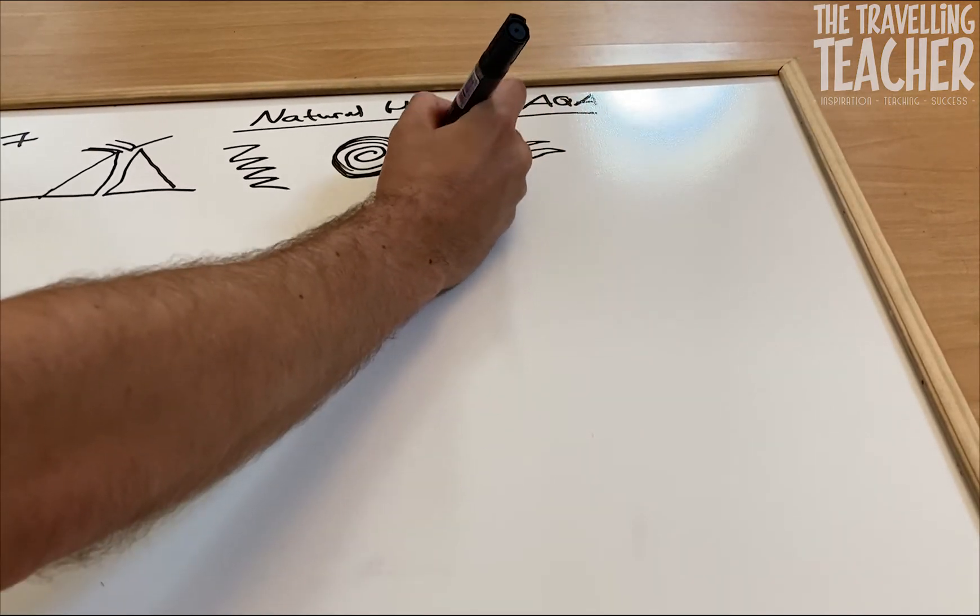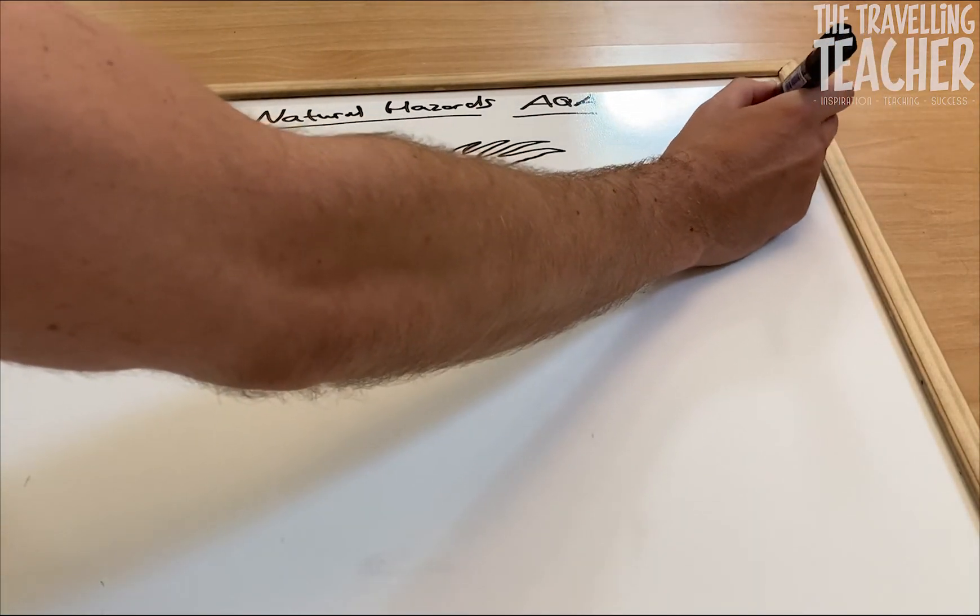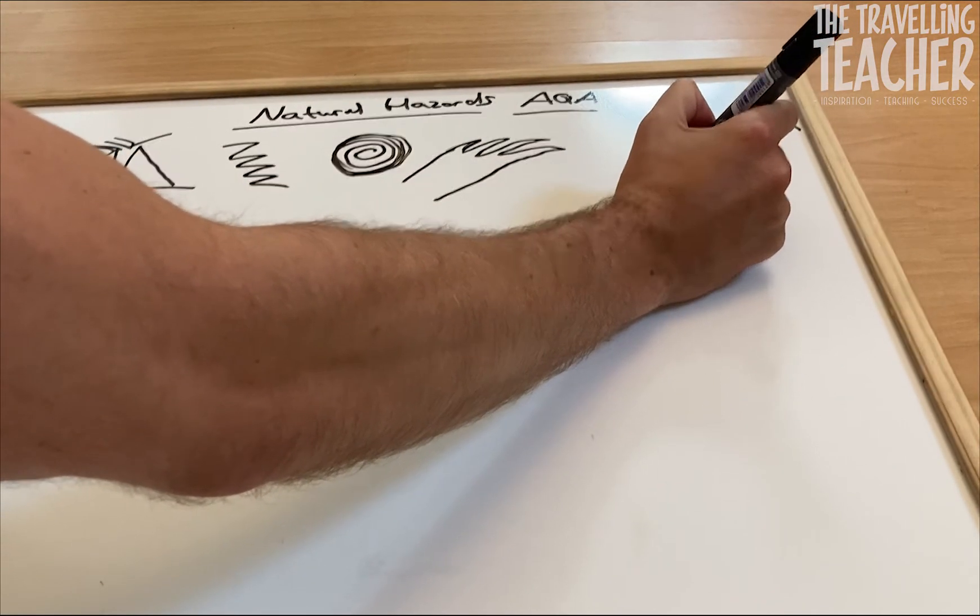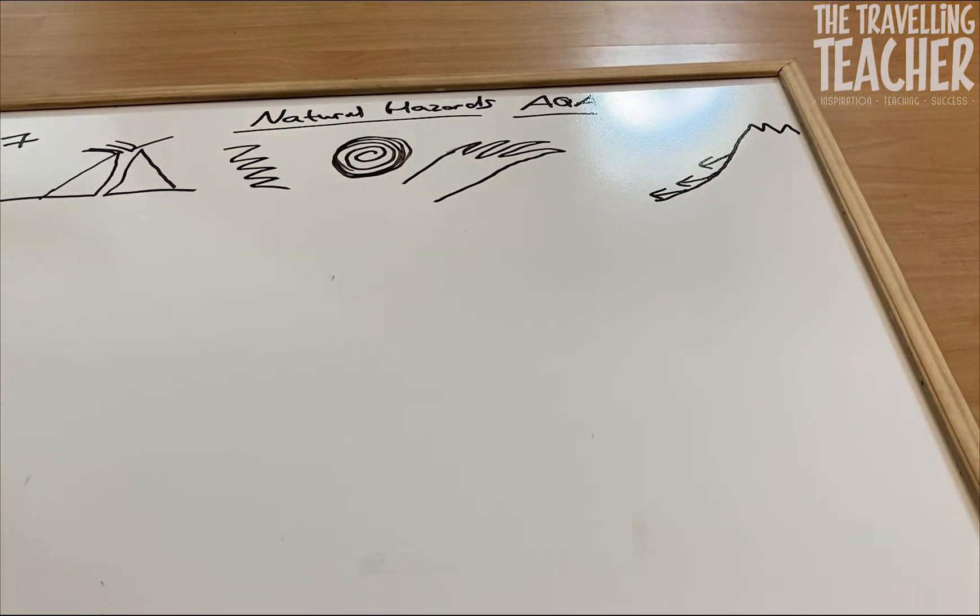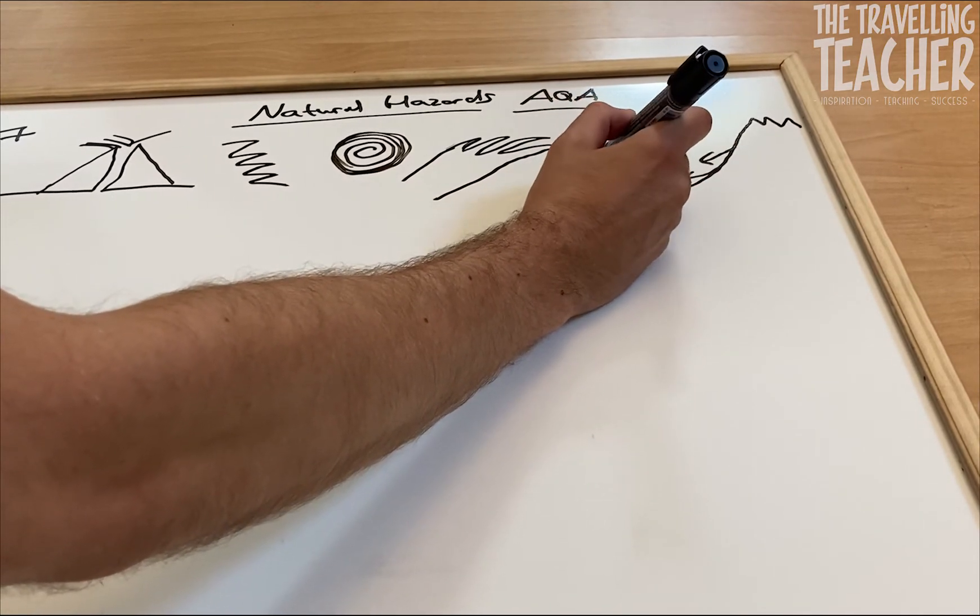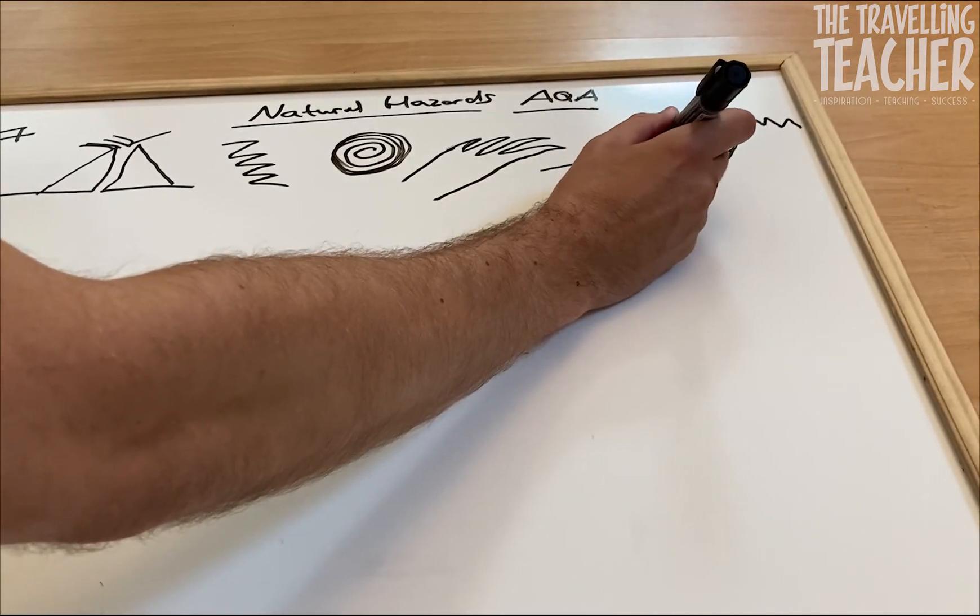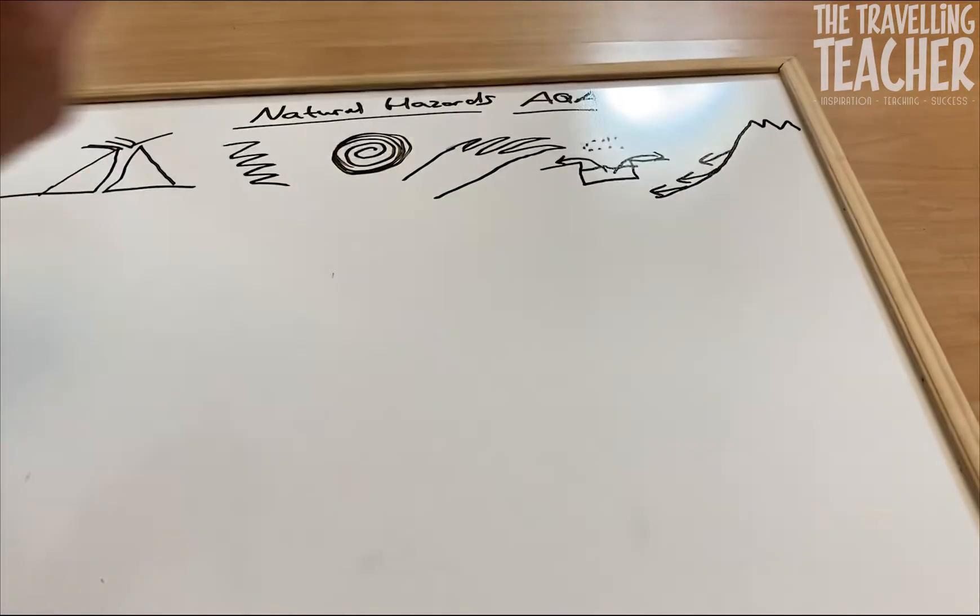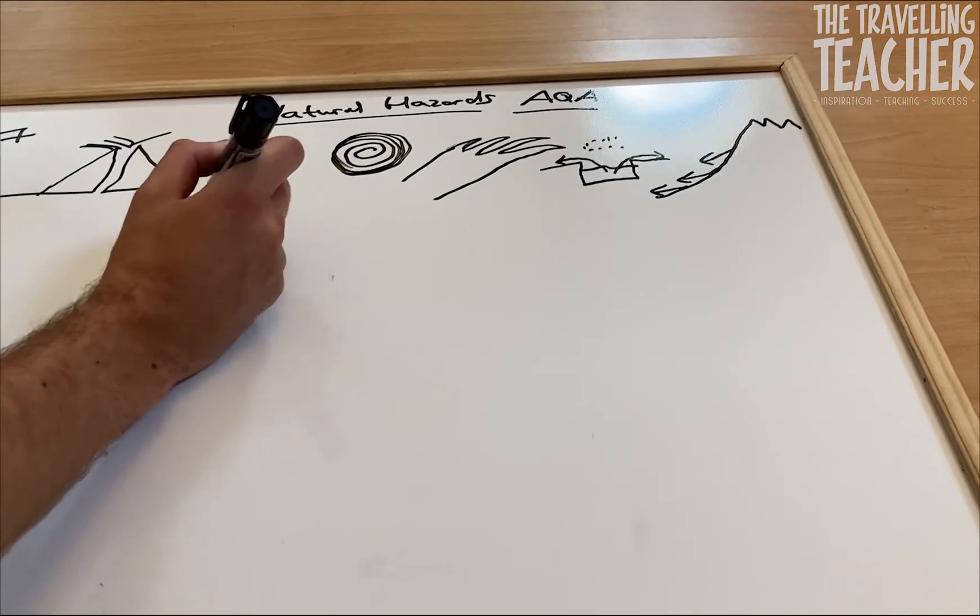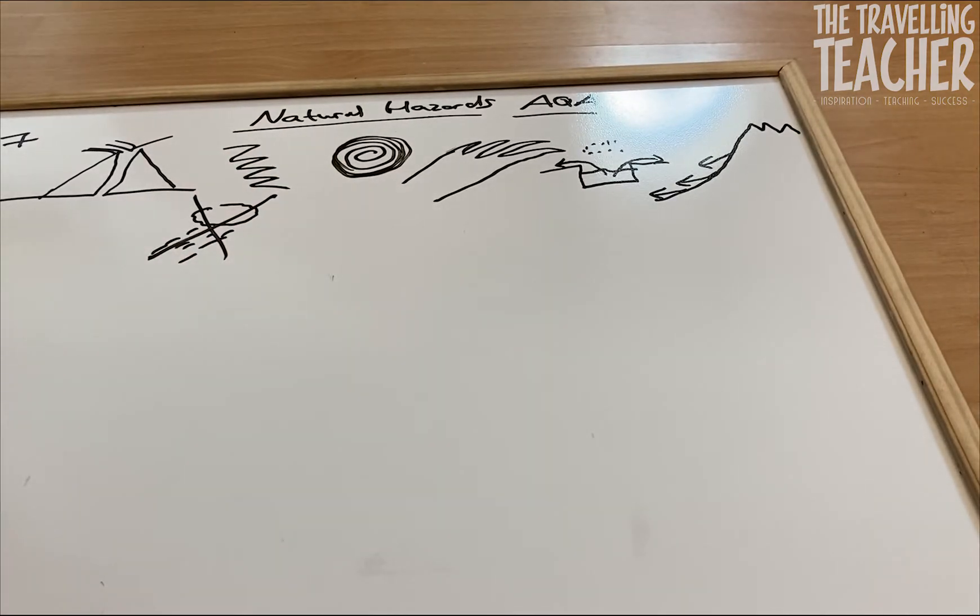The fourth would be those large waves known as a tsunami, there goes my large wave coming from the ocean. The next one could be a landslide, so we've got a mountain, it's when a side of the mountain slides down. The next one could be flooding, so this could be river flooding, so there's my cross-section of a river. And the last one would be drought, so if I draw some rain, obviously drought is a lack of rain.